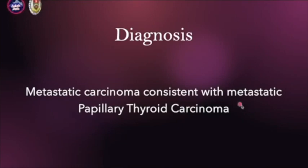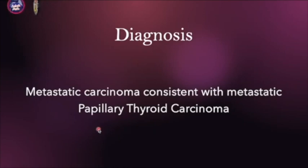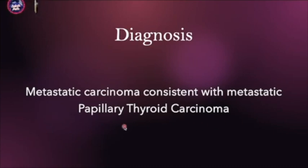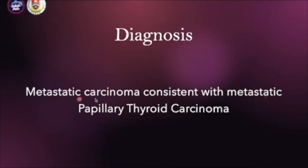But if it is within the lymph node, it's almost always metastatic carcinoma. Usually in practice, we still do immunohistochemistry — we do CK7 and CK20 for the origin, and sometimes we do TTF1 and thyroglobulin to confirm origin from the thyroid gland. But for undergraduates, by this description, we can accept this diagnosis.